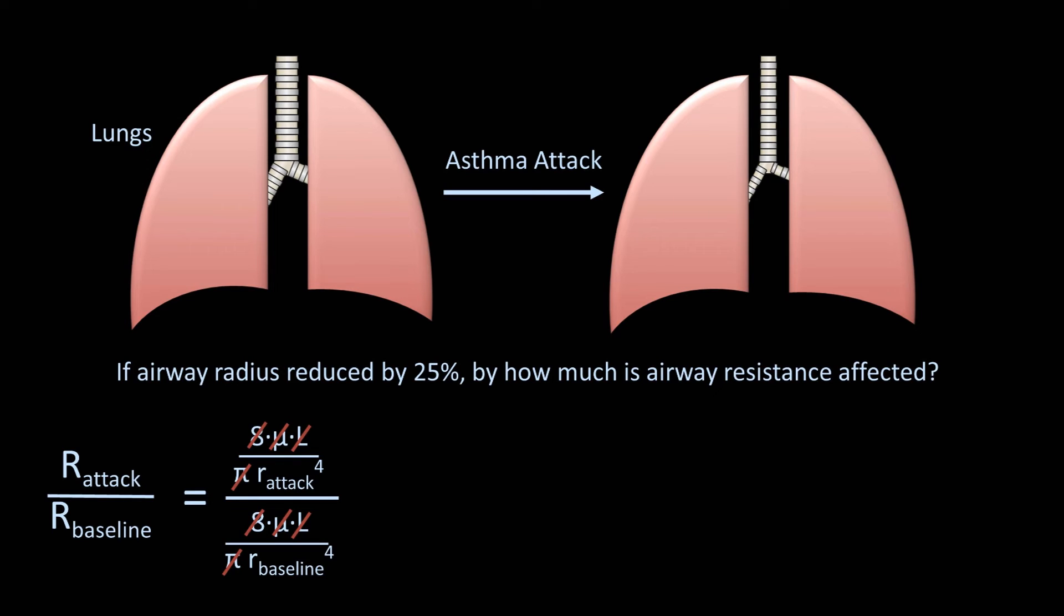Nearly everything cancels, and we can replace the value for radius during the attack with three-quarters radius at baseline. When this is calculated, we find the ratio to be just above three. In other words, when airway radius is reduced by a modest-sounding 25%, airway resistance increases to 300% baseline. You can imagine why asthmatics struggle so hard to breathe during an attack.